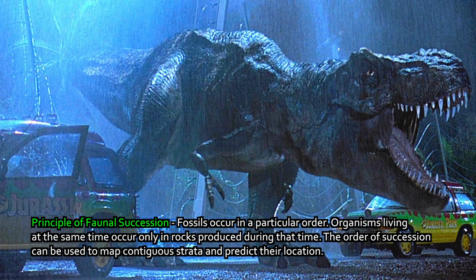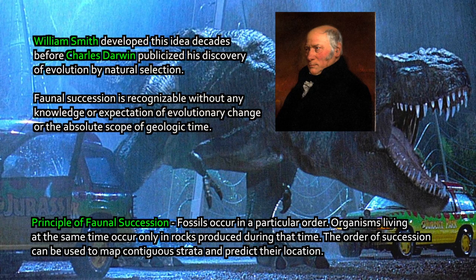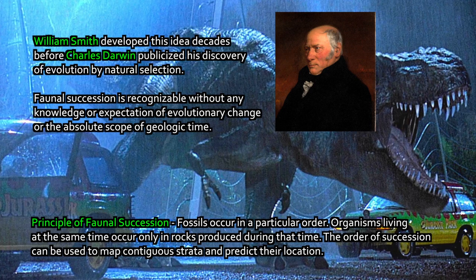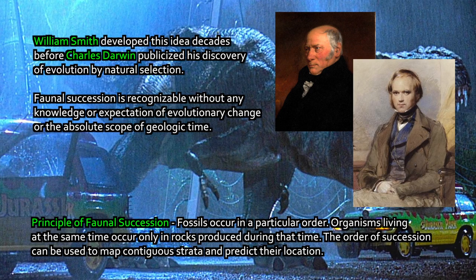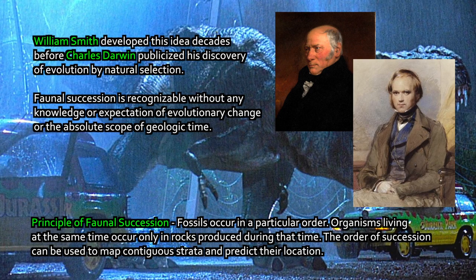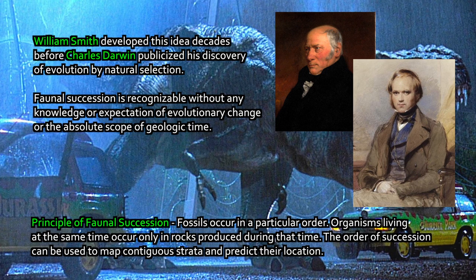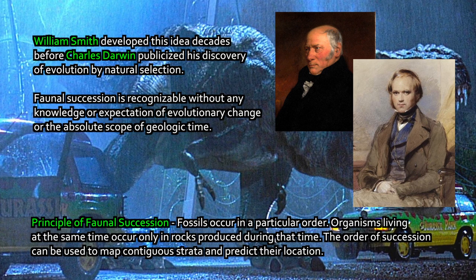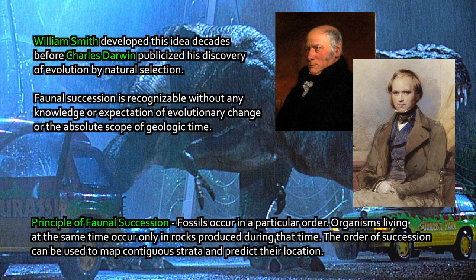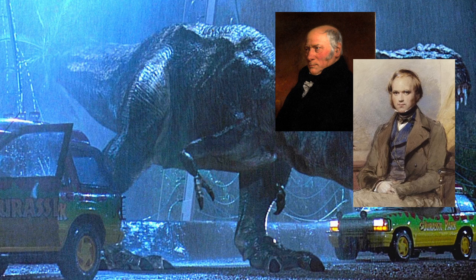A key idea to reiterate here is that when William Smith discovered faunal succession and popularized the idea in his maps, this was before Charles Darwin — long before, decades before Darwin had published Origin of Species — so no one knew anything about evolution. William Smith had no concept of evolutionary change, and he wasn't depending upon that understanding to map the geology of England. He was simply using the fossils as funny marks, and still they did the job.